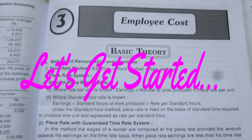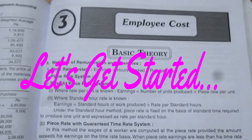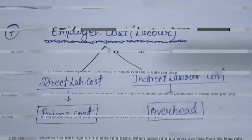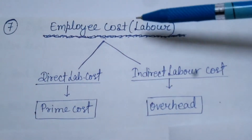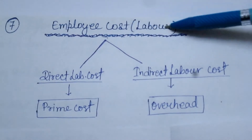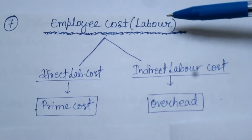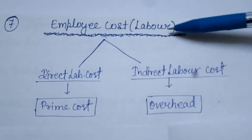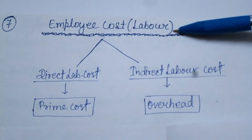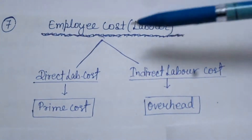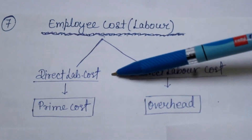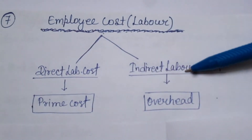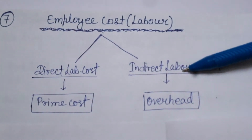So let's start with today's video. Let's get started. Employee Cost — Employee Cost को हम Labor Cost के नाम से भी जानते हैं guys. Labor Costing जो होती है वो दो तरह की होती है: पहली है Direct Labor Cost, और दूसरी है Indirect Labor Cost.